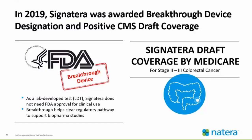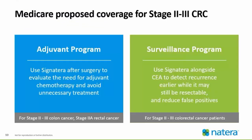The Signatera draft coverage by Medicare was for stages two to three colorectal cancer in two different settings. In the adjuvant program — post-surgery — Signatera was used after surgery to evaluate the need for adjuvant chemotherapy and avoid unnecessary treatment for stages two to three colon cancer and stage 2A rectal cancer. In the surveillance program, Signatera alongside CEA was used to detect recurrence earlier, while it may still be resectable, and to reduce false positives — for stage two to three colorectal patients.